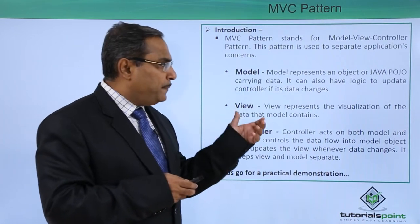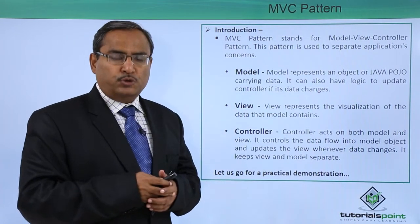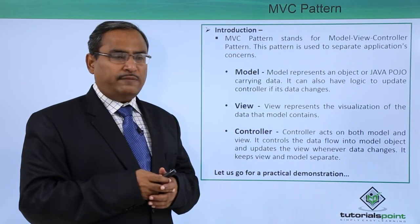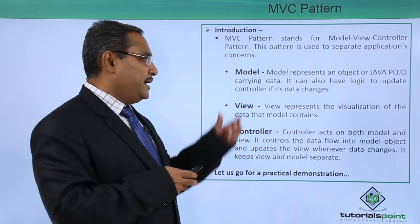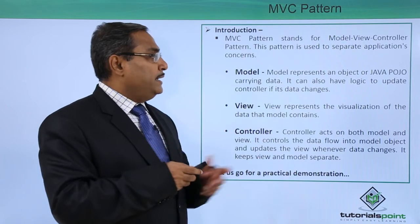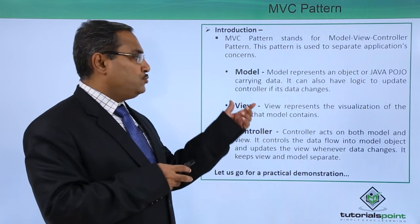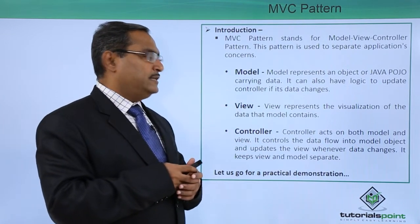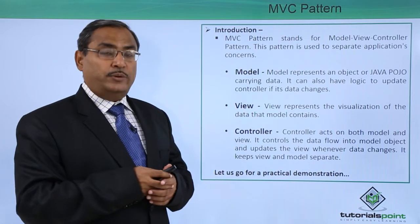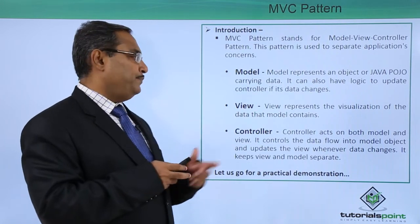Model represents an object or Java POJO — Plain Old Java Object — which carries data. Model deals with the data and can also have logic to update the controller if its data changes. When the data changes, it will update the controller accordingly.